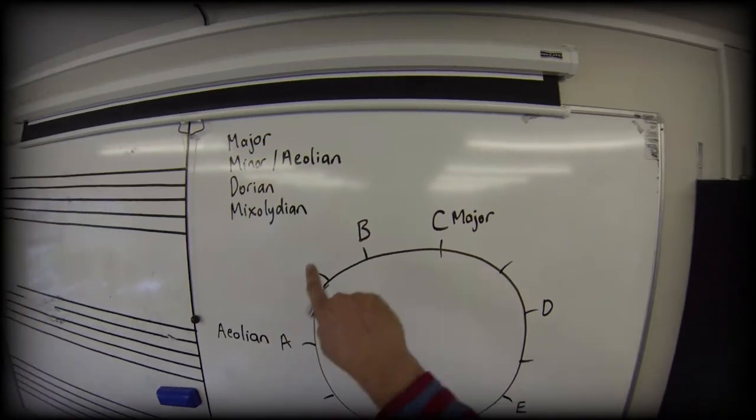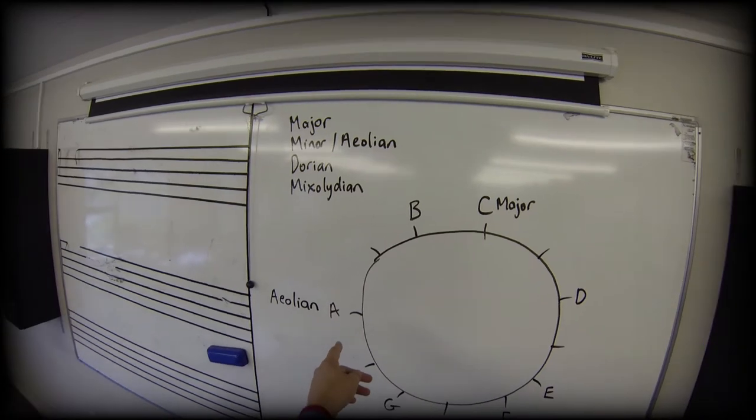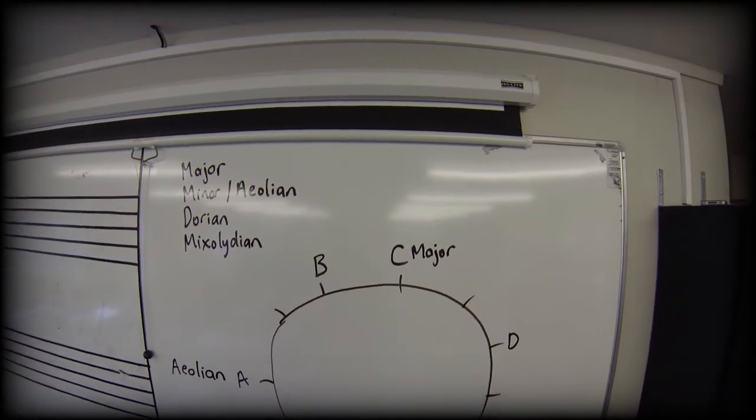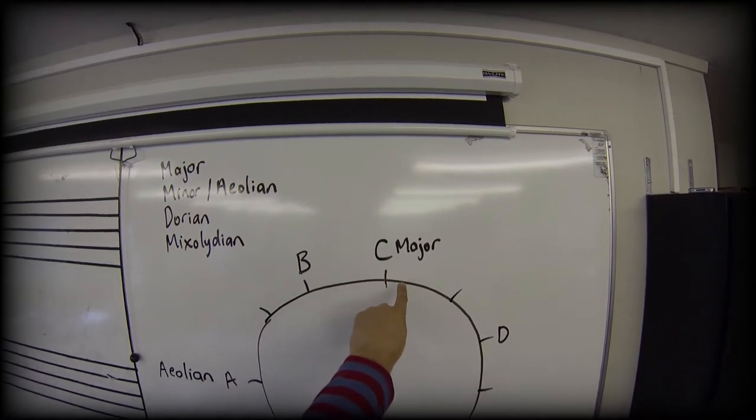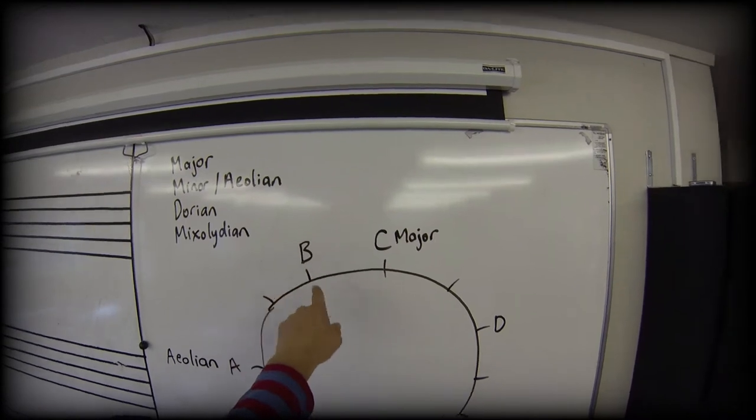So if I go around the circle from A to A and I look at whether I make steps of twos which are also called tones, and steps of one which are also called semitones, I can tell what my step pattern is for an aeolian or minor.